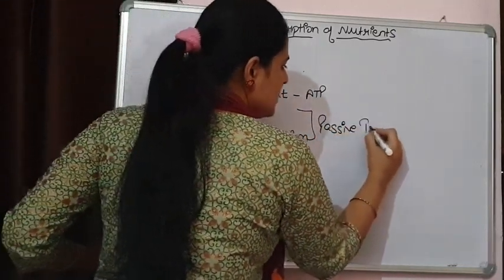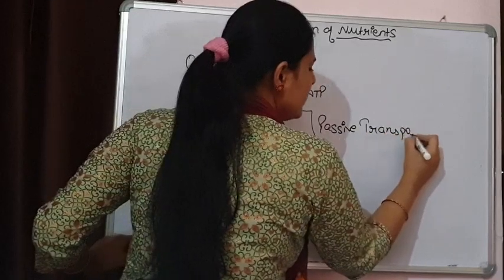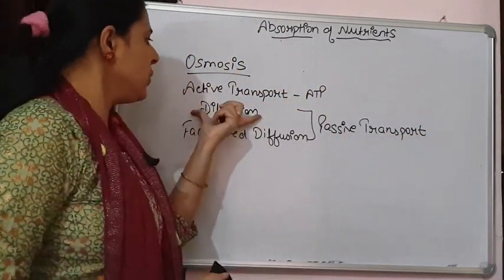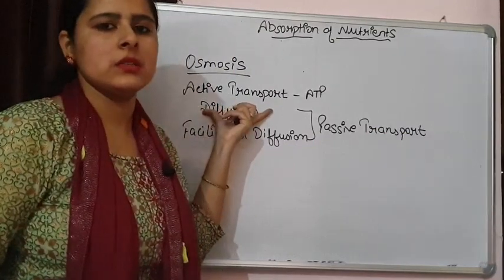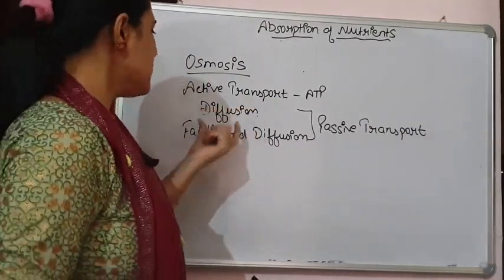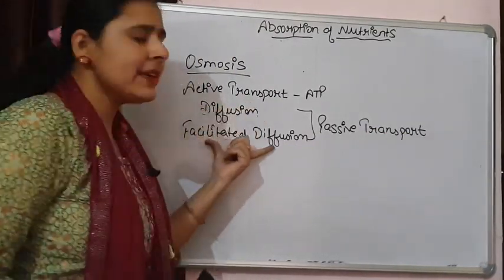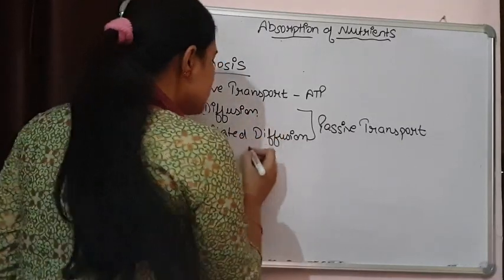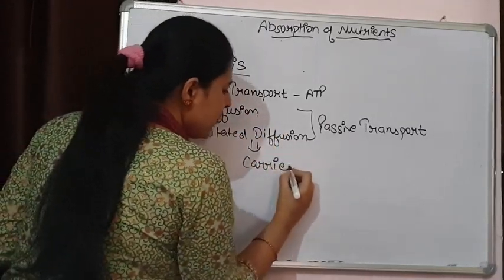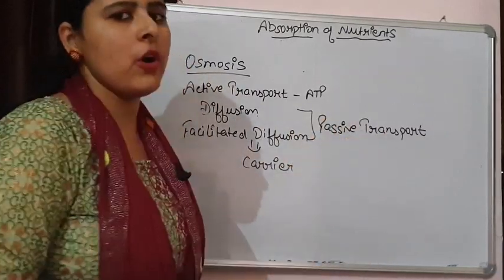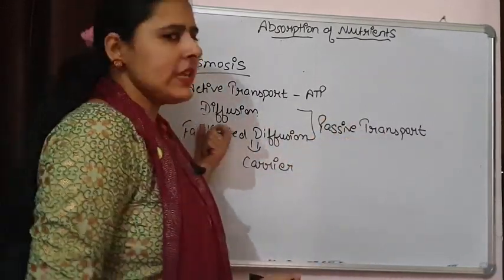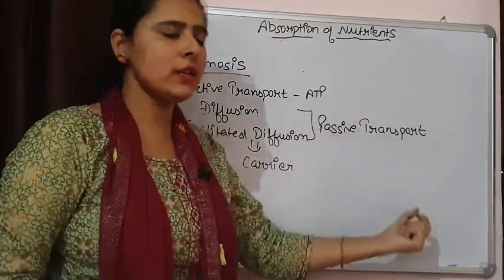There is a difference between normal diffusion and facilitated diffusion. Both are part of passive transport, meaning no energy is required. In normal diffusion there is no assistance — no one is going to help in the movement of substances. Facilitated diffusion simply means there are some carrier proteins or carrier particles which are helping in the movement of substances. That is why we call it facilitated diffusion.